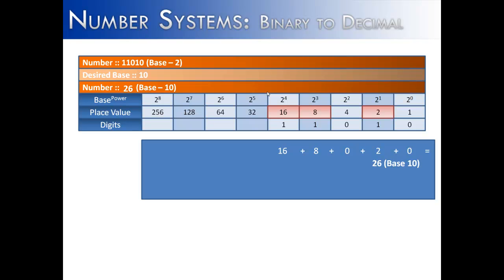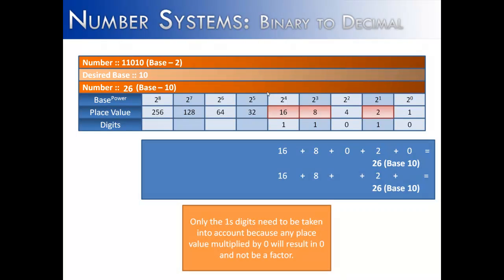So 16 plus 8 plus 2 is 26 in base 10. And you'll notice here that any digit that has a 0, because you're going to multiply 4 times 0 or 1 times 0, does not need to be included. So therefore, here's the answer again without the 0s.